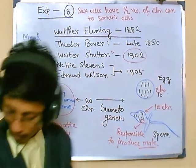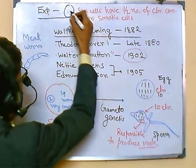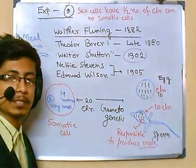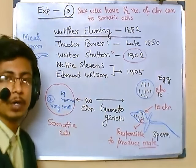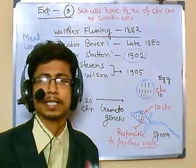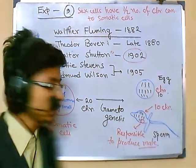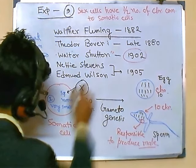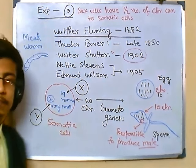This came in 1905, and that is Experiment Number 9, conducted by Nettie Stevens and Edmund Wilson. This same idea is applicable to all organisms including human beings. In humans, all 19 normal chromosomes are termed X, and that one small chromosome is termed Y.